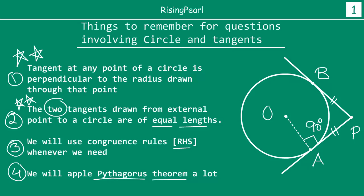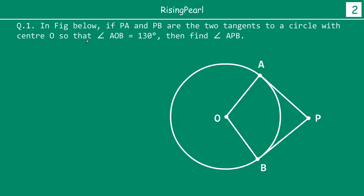Now let's take a look at some real questions. The first question: if in the figure below PA and PB are two tangents to a circle with center O, and angle AOB is given as 130 degrees, find angle APB. To solve this, we first do a small construction — we join O and P.